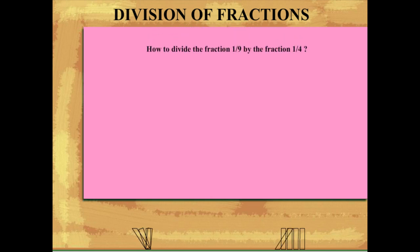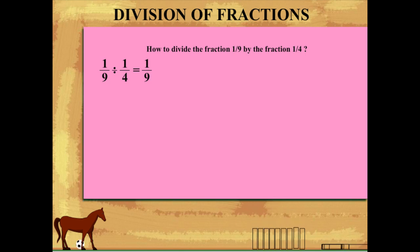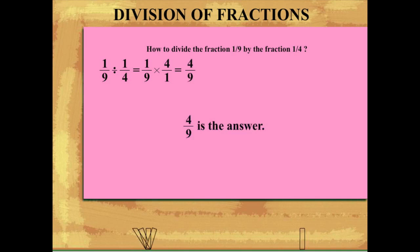Now, let's see what you get by dividing 1 upon 9 with 1 upon 4. So, 1 upon 9 divided by 1 upon 4 is equal to 1 upon 9 into 4 upon 1, is equal to 4 upon 9, and this is the answer.